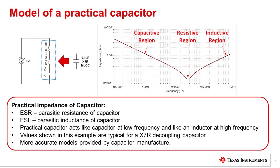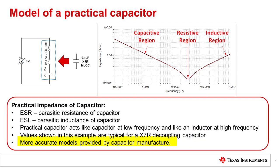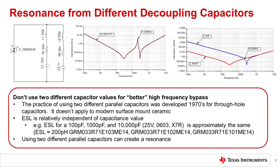To understand decoupling, it is important to understand a practical model for a capacitor. An ideal capacitor would have capacitive reactance that would always decrease at higher frequencies. A real-world capacitor has parasitic resistance called ESR and parasitic inductance called ESL. The impedance of a practical capacitor will decrease until it reaches the ESR limit, then will begin to increase because of ESL. The example shown here is a typical X7R capacitor which is frequently used for decoupling. One commonly used decoupling method is to use multiple different values in parallel, for example, a 100 nF and a 1 nF in parallel.